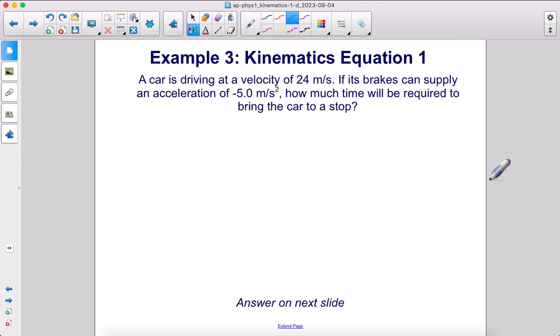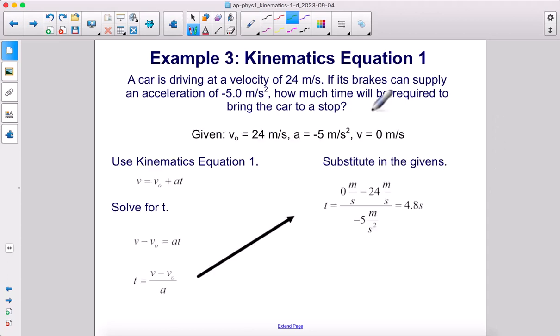A car is driving at a velocity of 24 meters per second. If its brakes can supply an acceleration of negative 5 meters per second squared, how much time will be required to bring the car to a stop? Our givens: initial velocity is 24, final velocity is zero. This is a secret given because it says bring the car to a stop. The acceleration is negative 5.